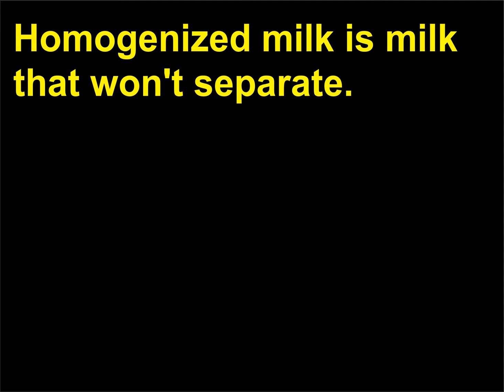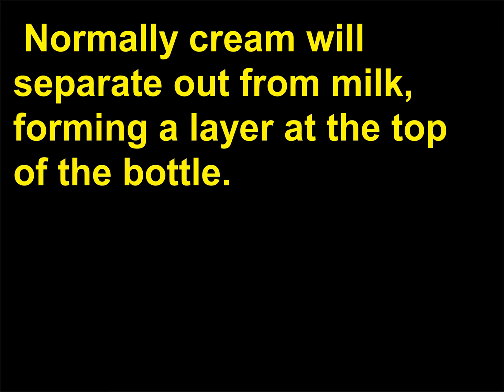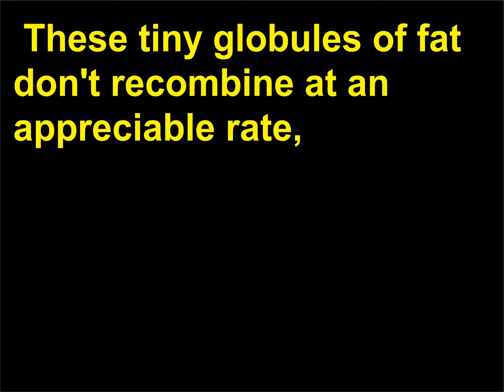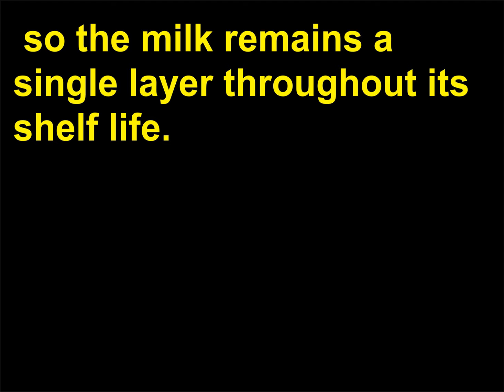What is homogenized milk? Homogenized milk is milk that won't separate. Normally cream will separate out from milk, forming a layer at the top of the bottle. To prevent this separation from happening, milk is treated with pressure to break up the little clusters of fat into much, much tinier pieces. These tiny globules of fat don't recombine at an appreciable rate, so the milk remains a single layer throughout its shelf life.